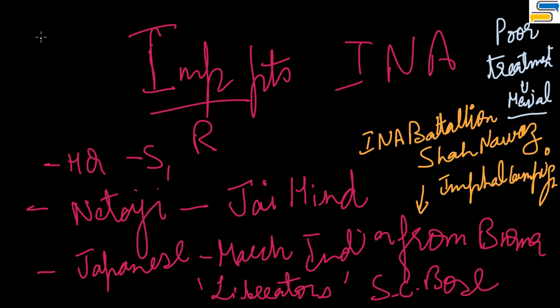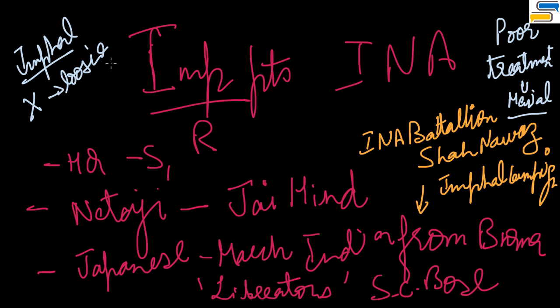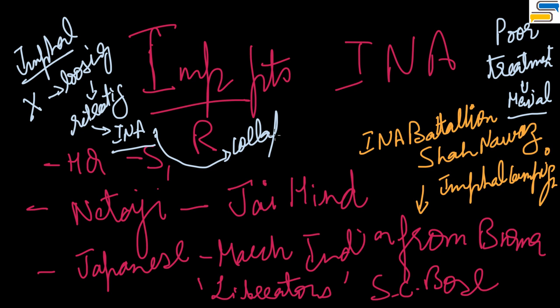The Imphal Campaign failed. The Japanese started losing and began retreating, and with their retreat, Indian hopes of getting freedom through INA also collapsed, because it was not possible for INA alone to fight the British.